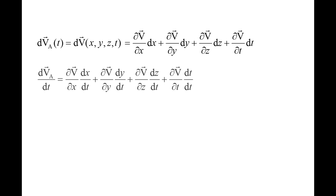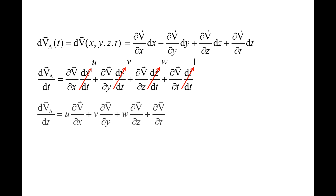Now we divide the entire equation by dt. On the right side of the equation, dx/dt is the x component of the velocity, lowercase u; dy/dt is the y component of the velocity, lowercase v; dz/dt is the z component of the velocity, lowercase w; and dt/dt is simply 1. Cleaning up the equation, we have a relationship for the time rate of change of the velocity of fluid element A from the Lagrangian point of view on the left, and the time rate of change of the velocity at the same location in space from the Eulerian point of view.